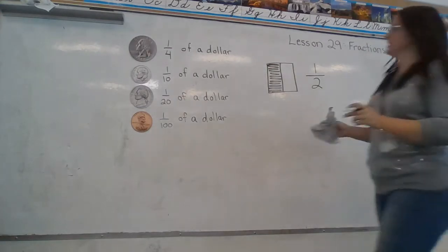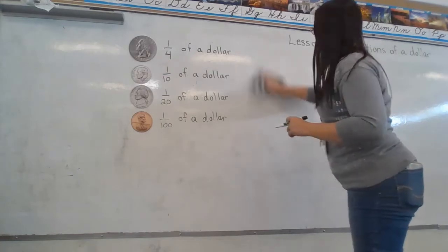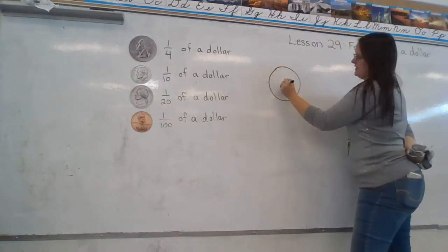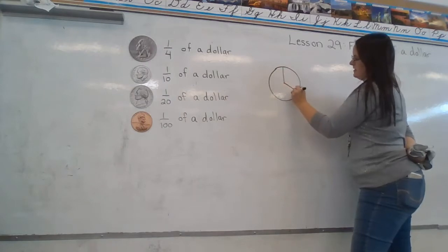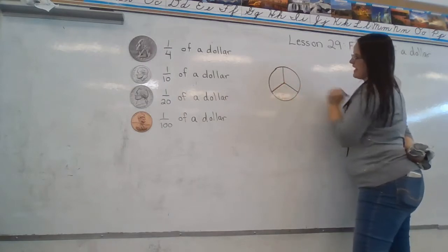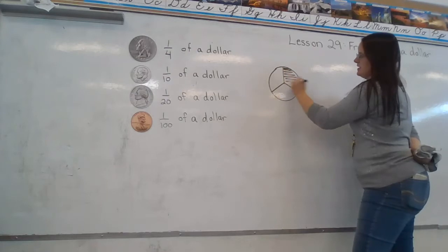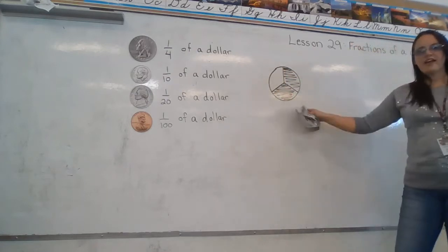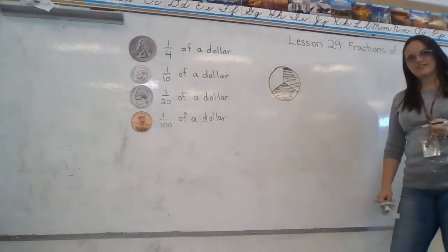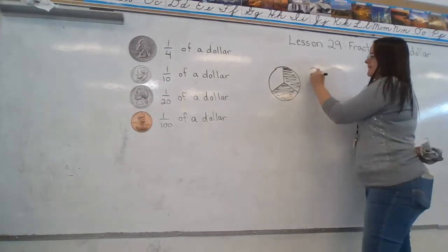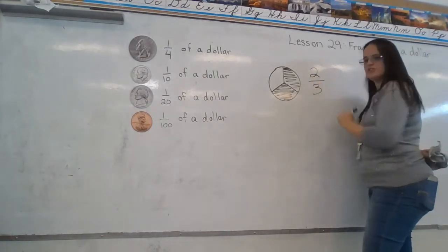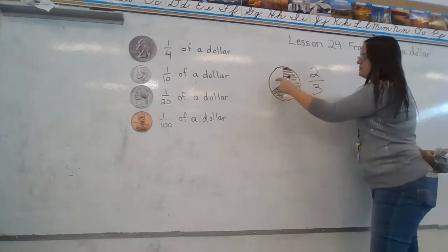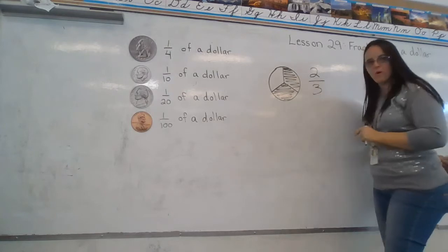The next picture is a circle, and this time it's broken into that many pieces, and these pieces are shaded. What fraction of this circle is shaded? If you said two-thirds, you would be correct. Two pieces are shaded, and it takes one, two, three to make the whole.